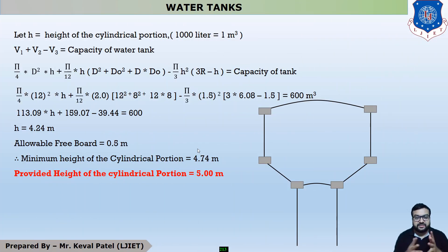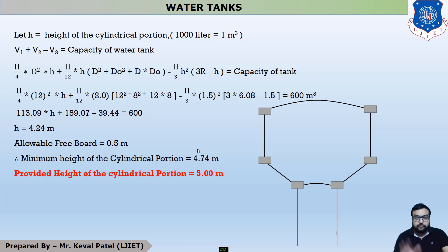Hello everyone, this is the second lecture of our example number one, which is the design of intze type of water tank. In the last lecture, we discussed the preliminary dimensions — also called the fixed basic dimensions — of the intze type water tank, and what are the dimensions of all the components. Now we are moving further to the design and detail of all the structural components.